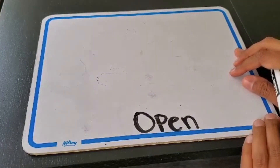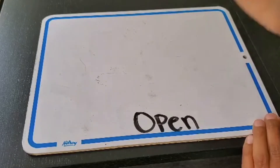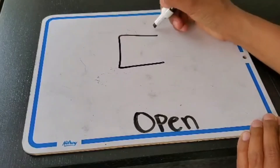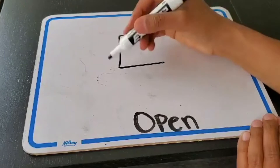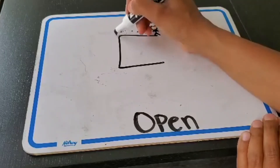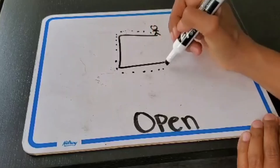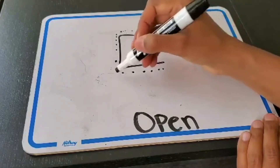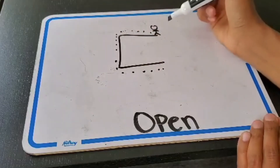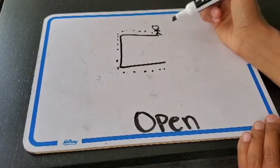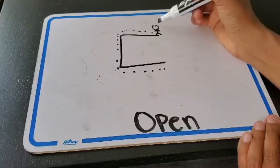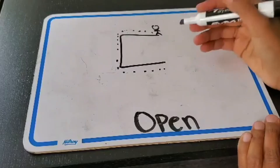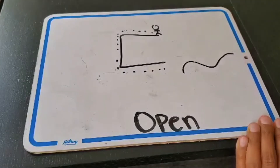An open line is a line where you cannot get back to where you started without having to turn around. For example, if I start over here and go around this shape, I come this way and then I get stuck — the only way to get back is to go back around. When that happens, it's called an open line.